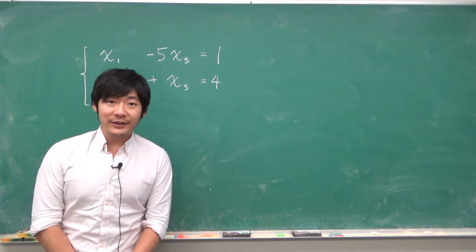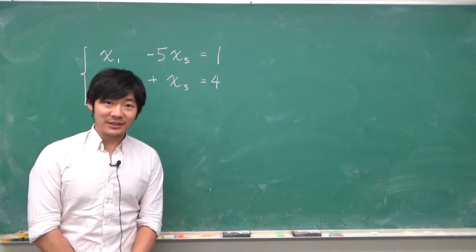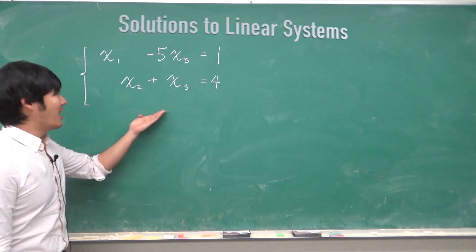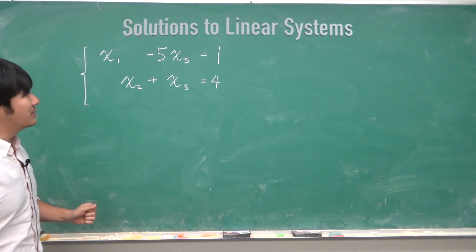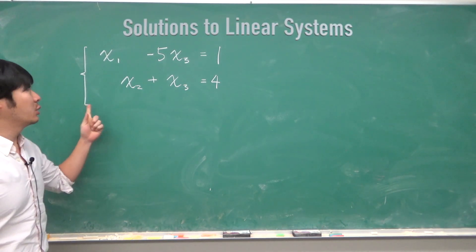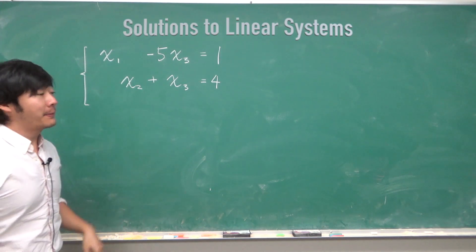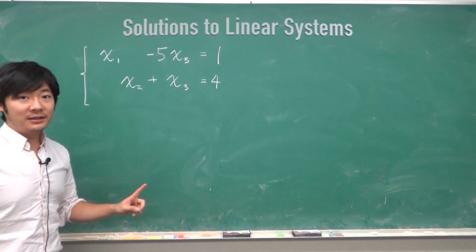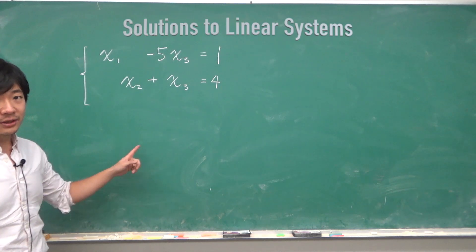Hello everyone, in this video I'd like to talk about solutions to linear systems. Here we have a typical linear system with two equations and three unknowns: x1, x2, and x3. The augmented matrix that corresponds to this linear system will look something like this.